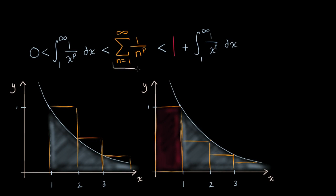You might recognize what we have here in yellow as the general form of a p-series. What we're going to do in this video is think about under which conditions — for what p's — this p-series will converge. For it to be a p-series, by definition, p is going to be greater than zero.